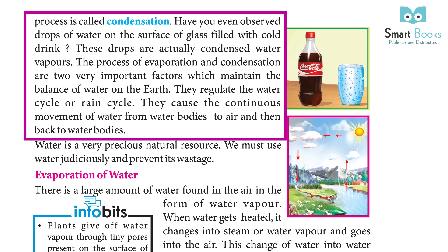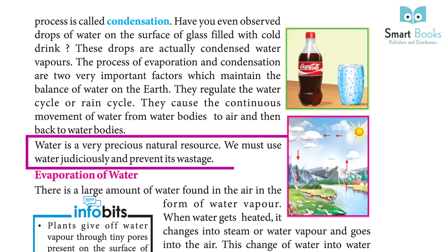The processes of evaporation and condensation are two very important factors which maintain the balance of water on the Earth. They regulate the water cycle or rain cycle. They cause the continuous movement of water from water bodies to air and then back to water bodies. Water is a very precious natural resource; we must use water judiciously and prevent its wastage.